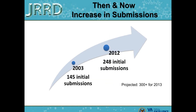We've also seen a dramatic increase in submissions between then and now. In 2003, we received 145 initial submissions. In 2012, we received 248. Our projection for this year is 300 plus. Please note these are only initial submissions — between various revisions for calendar year 2012, Lloyd and I handled more than 750 papers. So you'll forgive me if I don't remember exactly which paper you're talking about — Lloyd is very insistent on always knowing the manuscript number, and there's obviously a reason for that.